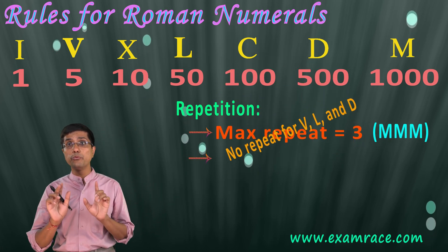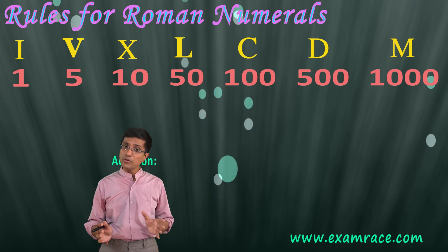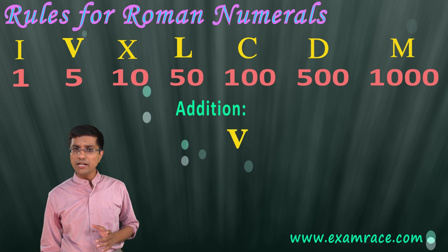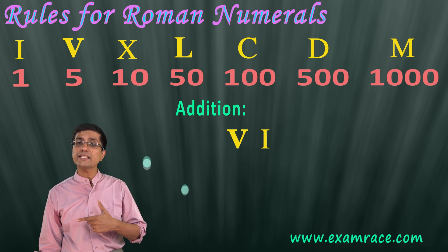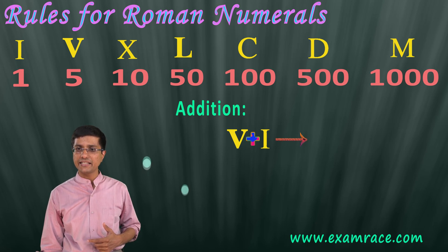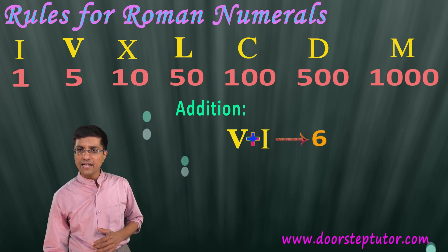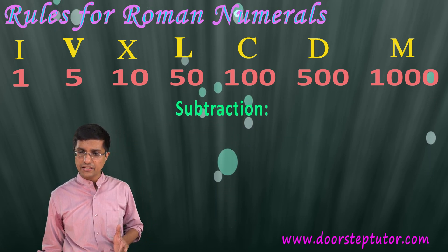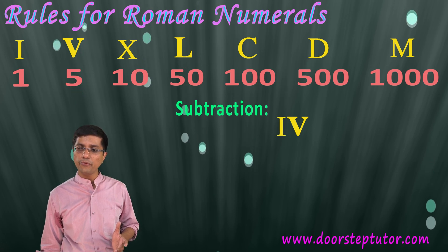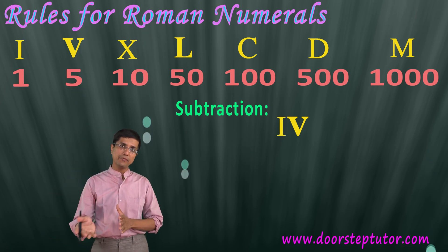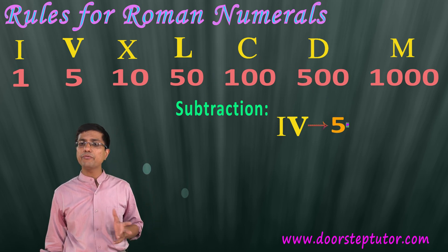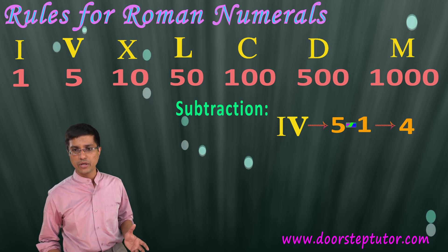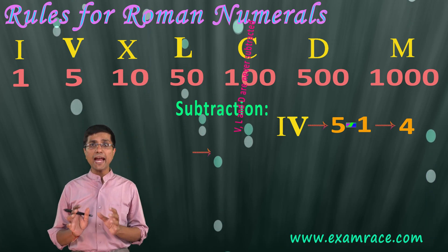The second rule is repetition — all of these digits can be repeated up to three times, except V, L, and D, which cannot be repeated. The third rule is if a smaller number follows a bigger number, the values get added. So V followed by I becomes 5 plus 1, which is 6. Similarly, if a numeral is placed before a larger number, it is subtracted — so I before V means 5 minus 1, which is 4.